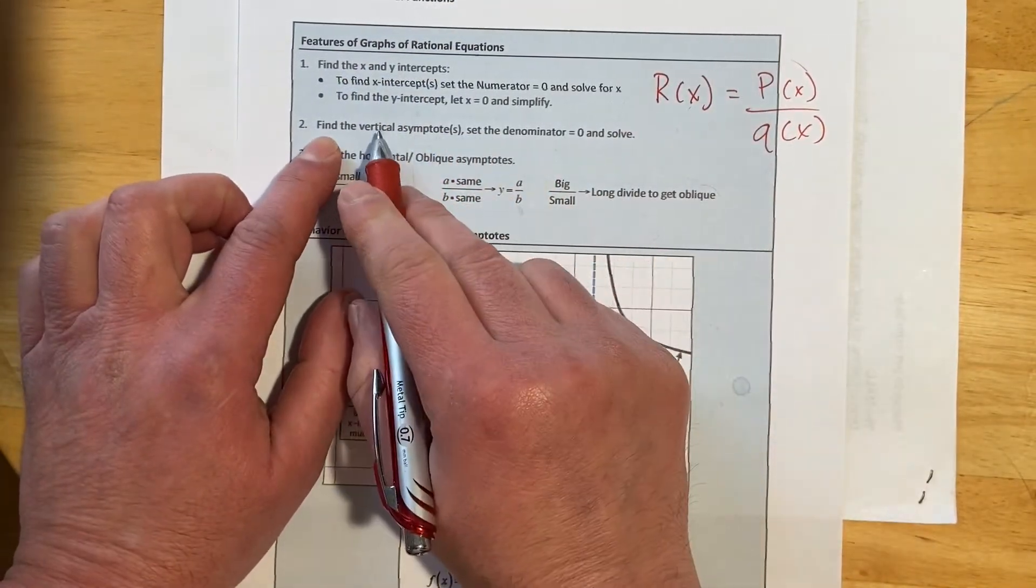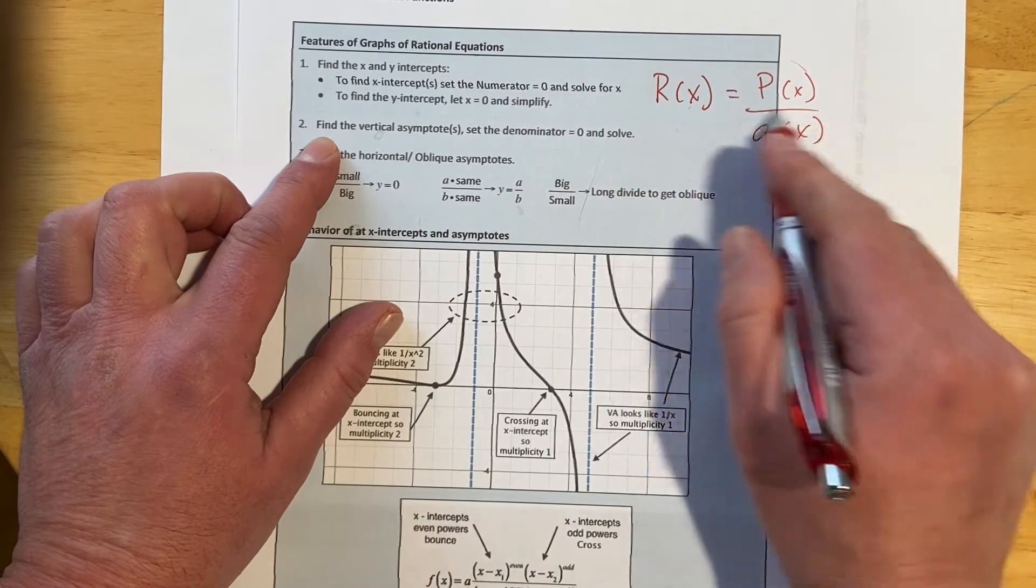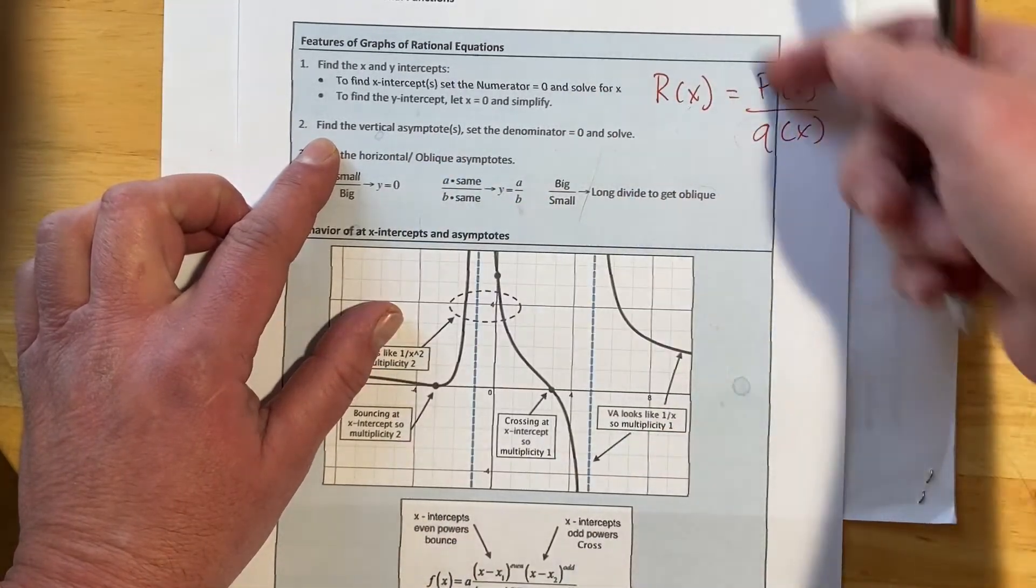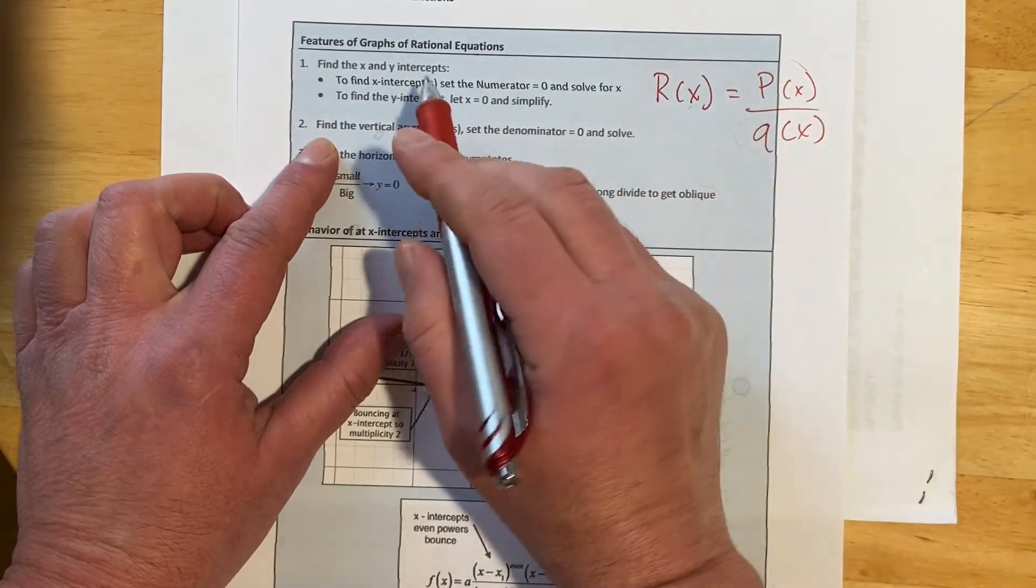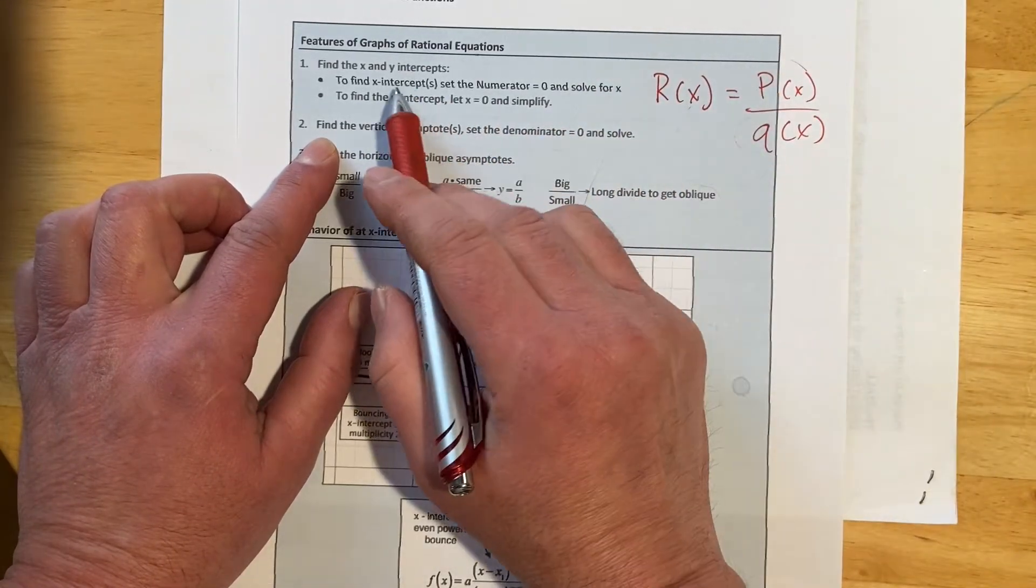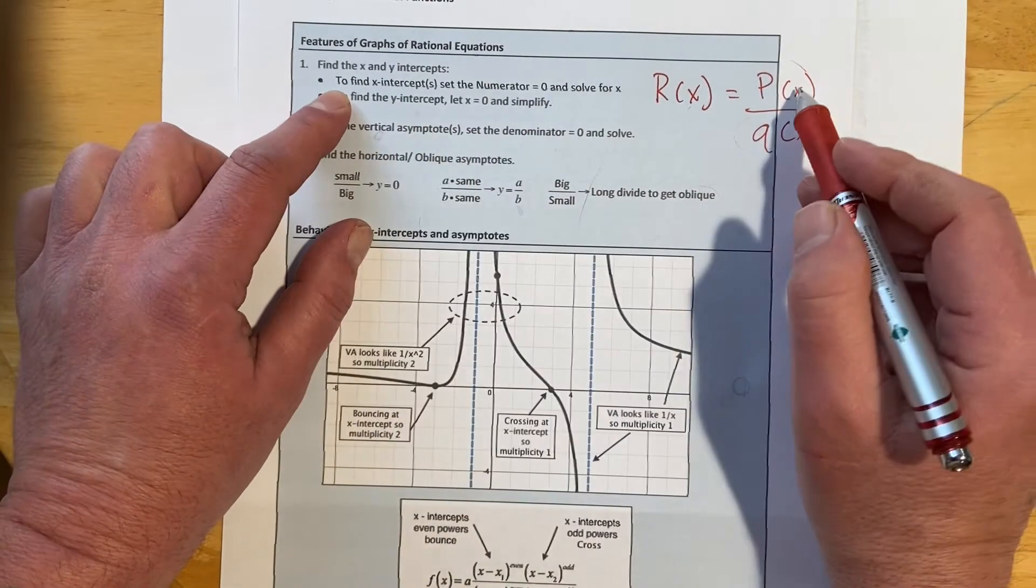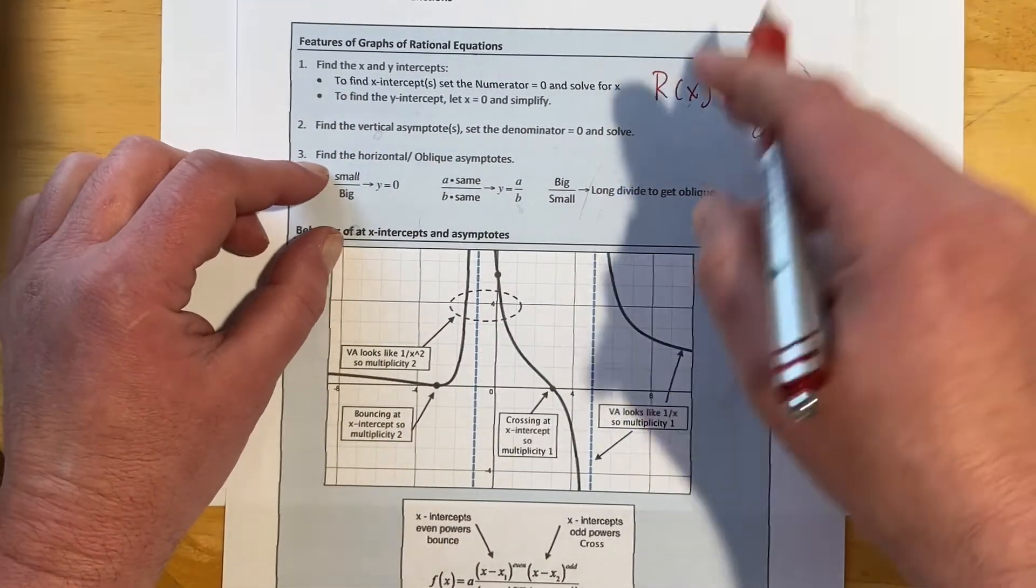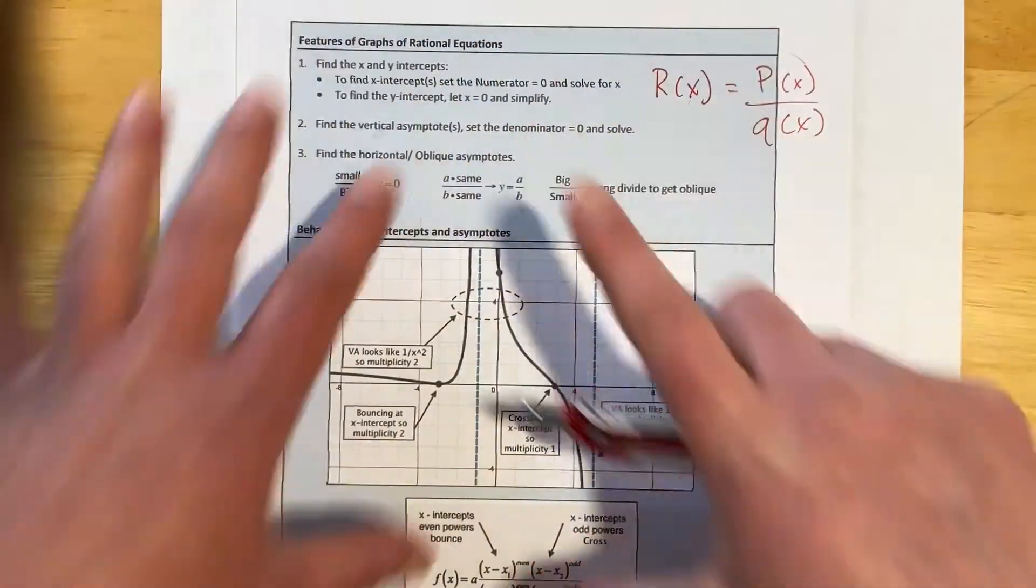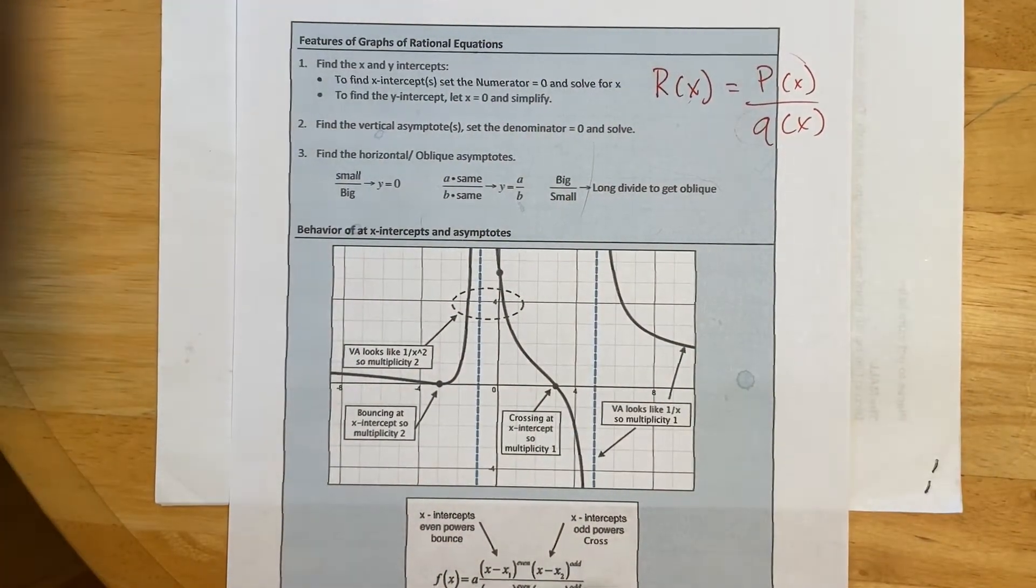To find vertical asymptotes, we set the denominator to 0 and solve. And that's in lowest terms, so that's assuming there isn't a hole in the graph. So again, numerator gives X intercepts, denominator gives vertical asymptotes. Once you figure out that that's what each of those things is doing, all of this becomes a lot less mysterious.